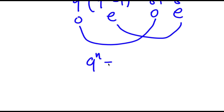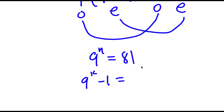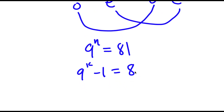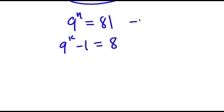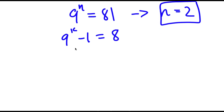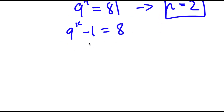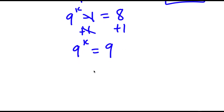So now I have 9 to the power of n is equal to 81, and 9 to the power of k minus 1 is equal to 8. For 9 to the power of n equals 81, n is obviously equal to 2, because 9 squared is 81. For 9 to the power of k minus 1 equals 8, I add 1 on both sides, so 9 to the power of k is equal to 9, meaning k is equal to 1.